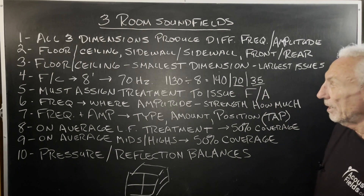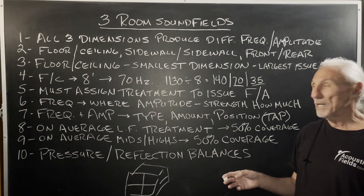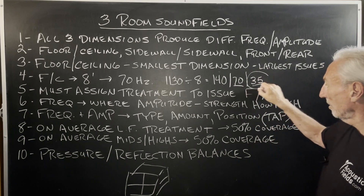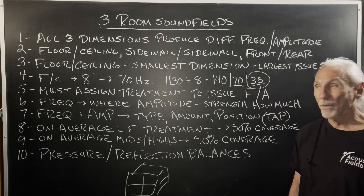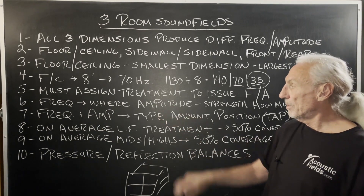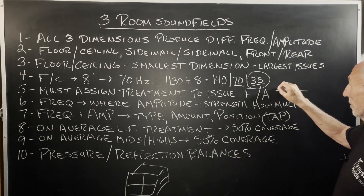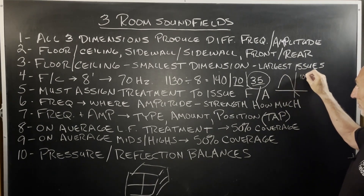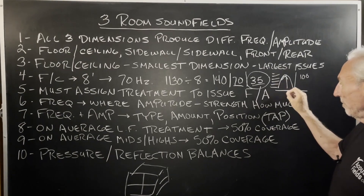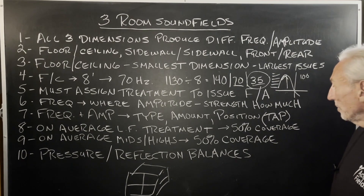70 and 140 with an 8-foot ceiling are a must for treatment. You always have to assign the proper treatment to manage the frequency and amplitude of the issue. If you have a 140, 70, and 35 issue, you want a product that starts at 35 — not too many out there, but ours does. Frequency is where it lies on our audio spectrum, and amplitude is strength — how big the issue is. We've all seen frequency response curves with that big peak below 100 hertz. You can measure how many dB it is above baseline, and that tells you how much treatment you'll need.